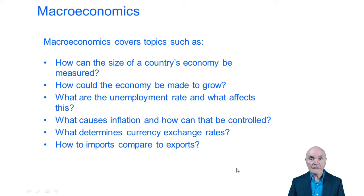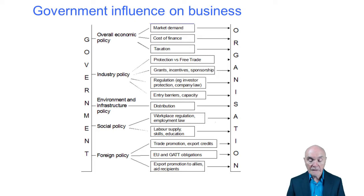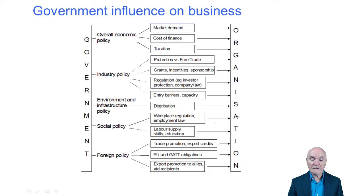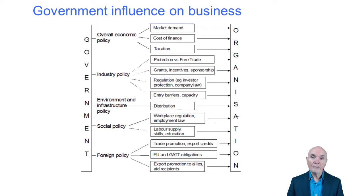Government is likely to get particularly involved in macroeconomics. There are a huge number of influences, and here we're just looking at a summary. Down the left you have the government, and down the right you have the effect on organisations. The government's overall economic policy will influence market demand. If the government were to reduce interest rates, more people are willing to borrow, and usually once you borrow you spend, stimulating demand in the economy.